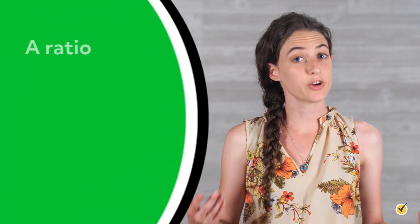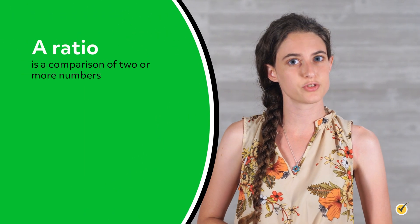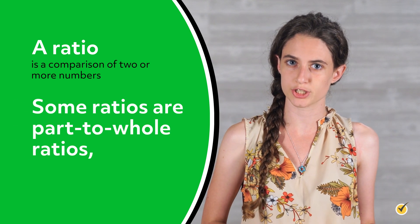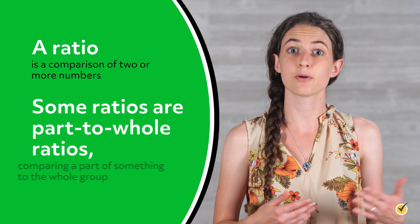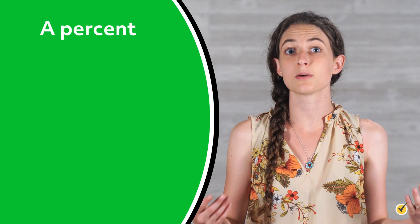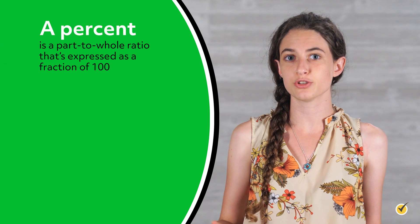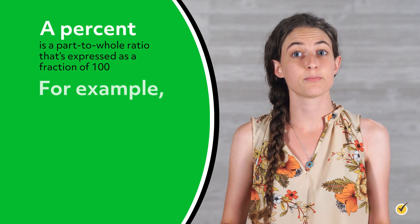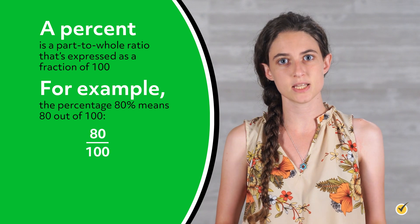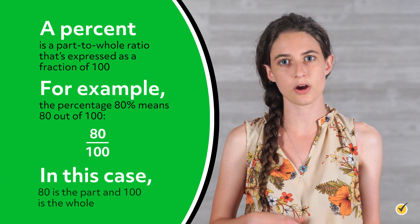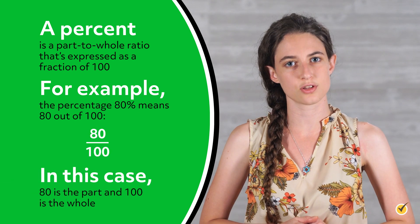Before we get started, let's review a few things. First, a ratio is a comparison of two or more numbers. Some ratios are part-to-whole ratios, comparing a part of something to the whole group. A percent is a part-to-whole ratio that's expressed as a fraction of 100. For example, the percentage 80% means 80 out of 100. In this case, 80 is the part and 100 is the whole.